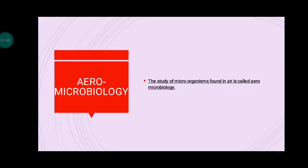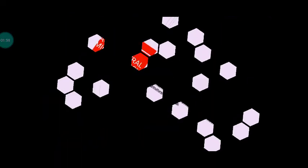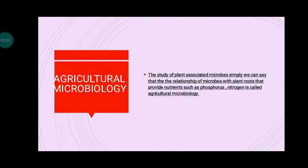The second branch of applied microbiology is agricultural microbiology — the study of plant-associated microbes. Simply, we can say that the relationship of microbes with plants and fruits that provide nutrients such as phosphorus and nitrogen is called agricultural microbiology.